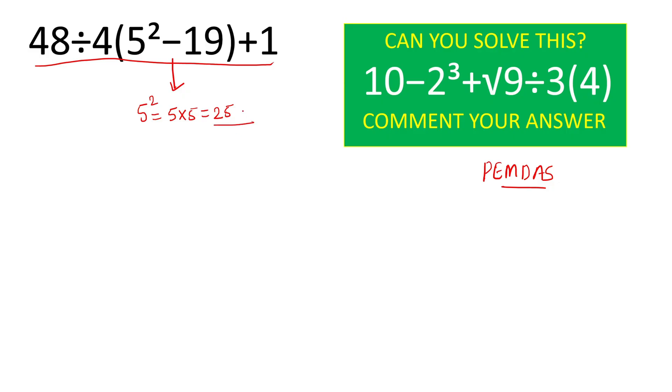And 25 minus 19 will give here 6, so we can simply put 6 value here in the place of this parenthesis. So we will rewrite as 48 divided by 4 times 6 plus 1.